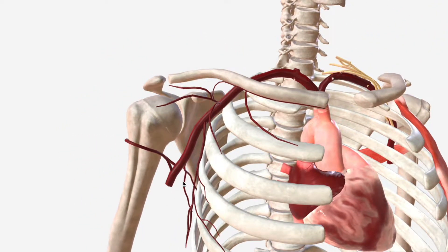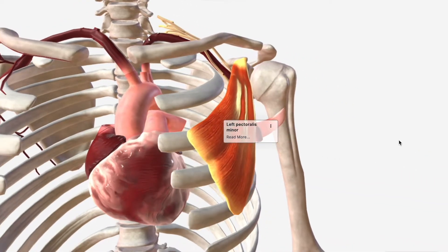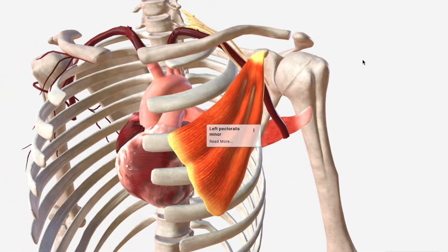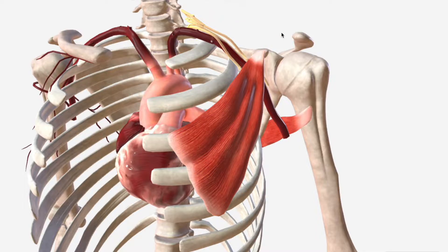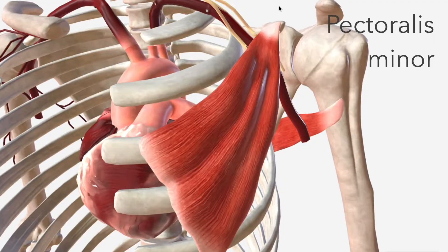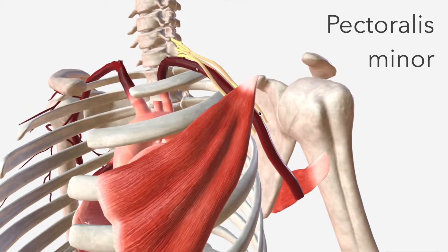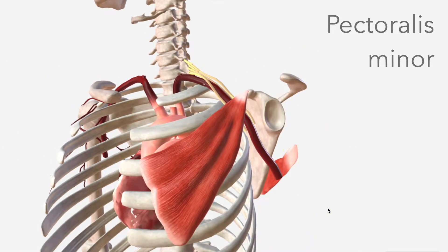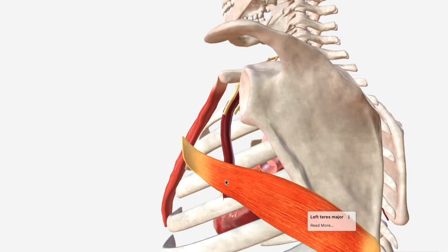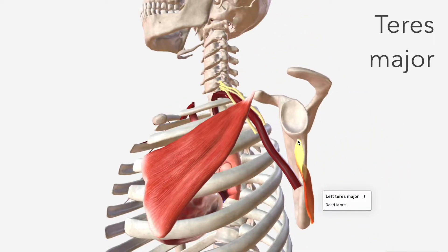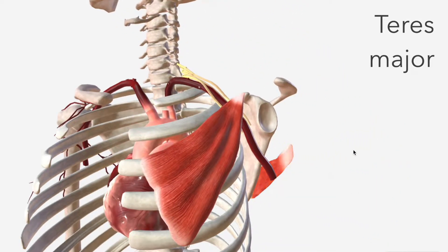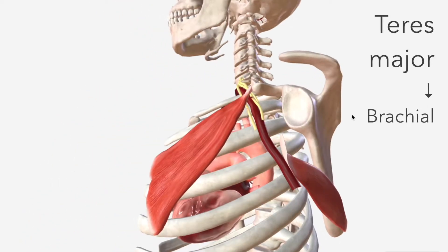The axillary artery provides the upper limb with its arterial blood supply. We tend to separate the axillary artery into three separate parts or segments, based on each segment's relationship to the pectoralis minor muscle. We have a segment that's proximal, one posterior, and one distal. The termination of the axillary artery is at the lower border of the teres major muscle, at which point it becomes known as the brachial artery.